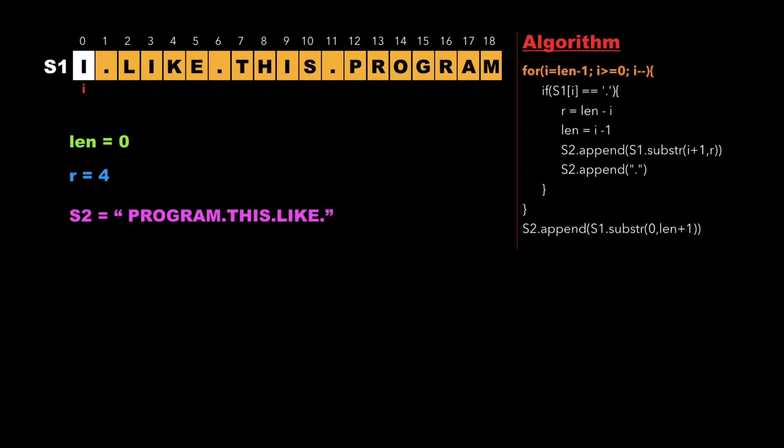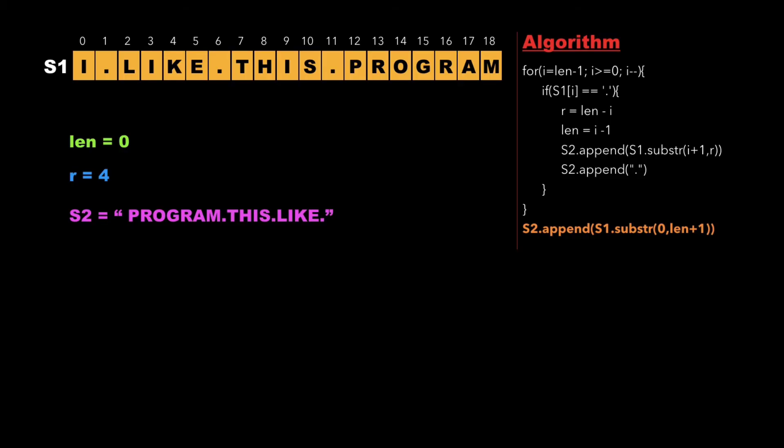We decrement i. Since s1[0] is not equal to dot, we decrement i again. Now i equals minus 1, and since i is not greater than or equal to 0, we end the for loop.